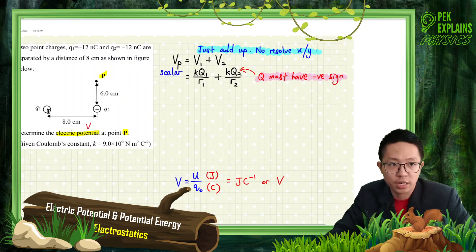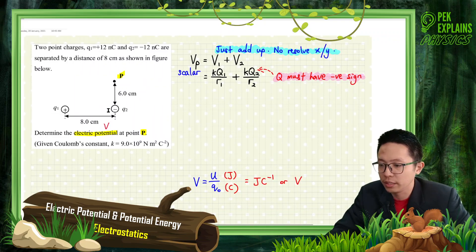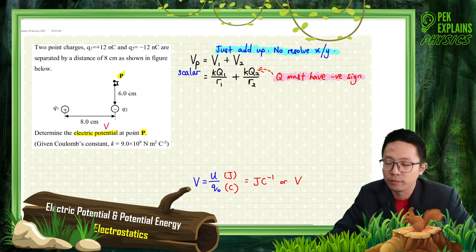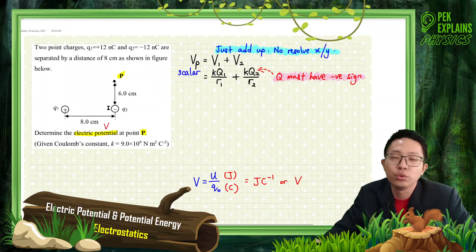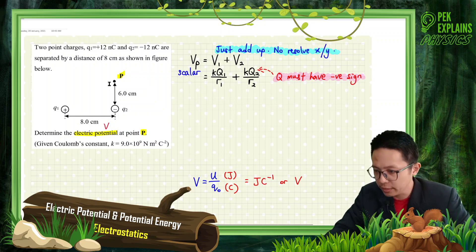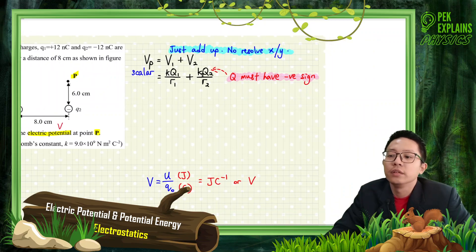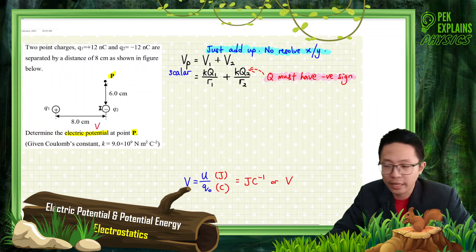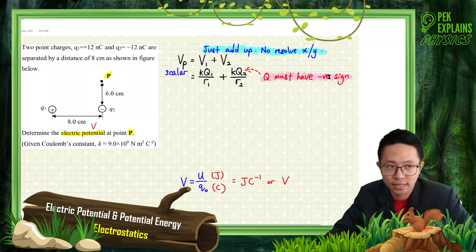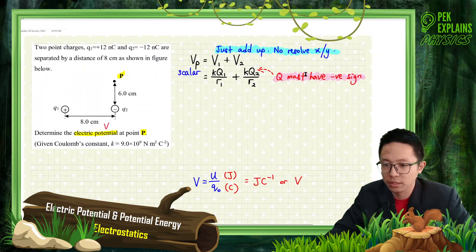Because we have a 2-point charge — Q1 and Q2 — we have 2 potentials, since each point charge provides an electric field and therefore a potential. For this one, we have a negative point charge, and you need to substitute the negative sign.